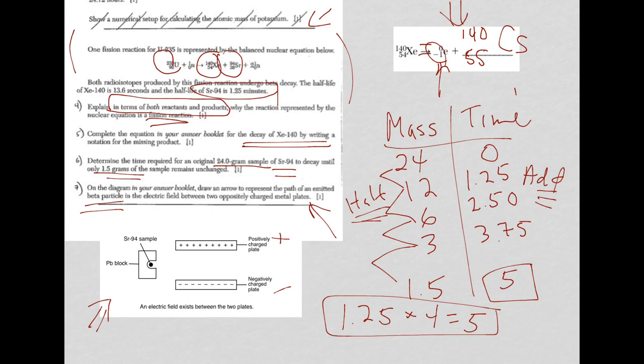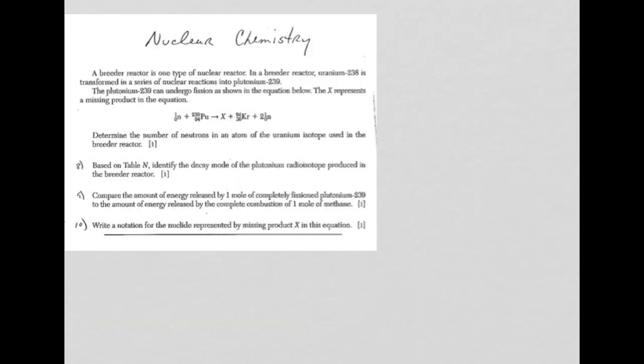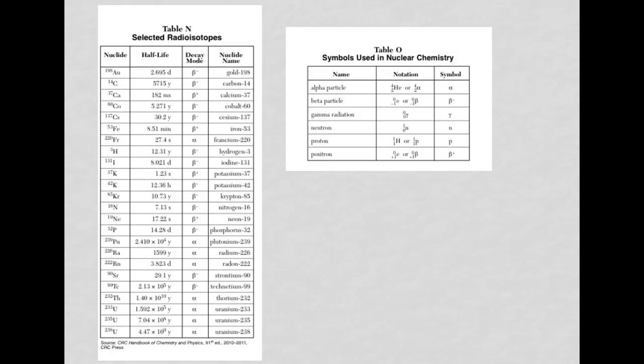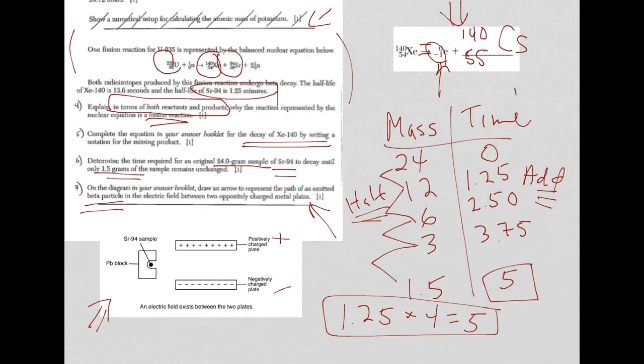We know opposites attract. Same charges repel. If you don't know, check out reference table O for a beta particle. Remember, you got that minus sign. So, we're talking about a negative particle. As it's going through, it's going to get attracted to the positive. So, you could draw it like this. You could have drawn it as long as you have it curving towards the positive. Because it is a negative particle. So, that's the correct answer.